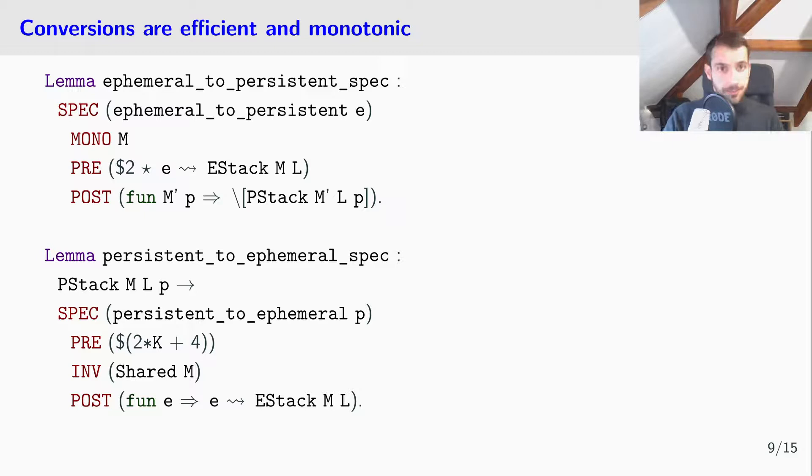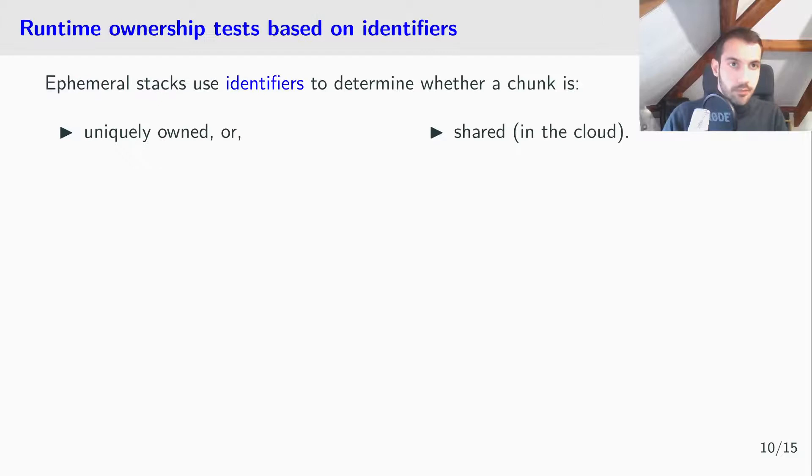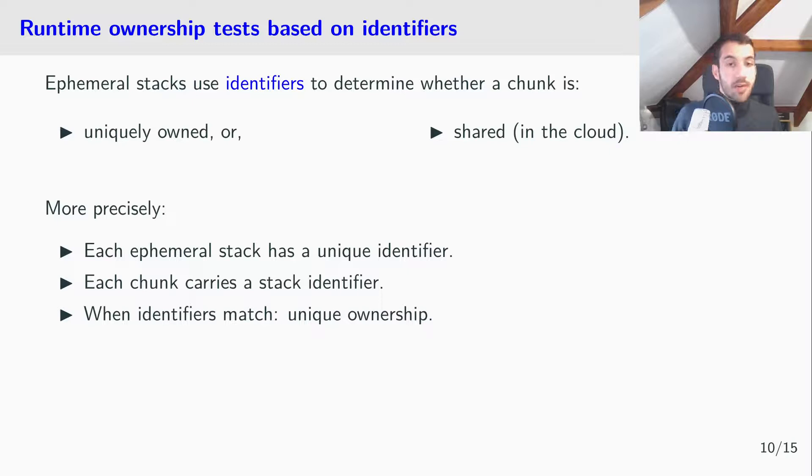Now, let's see some insight on the implementation. Indeed, ephemeral stacks use identifiers to determine whether a chunk is uniquely owned or shared, that is, in the cloud. More precisely, each ephemeral stack has a unique identifier, each chunk carries a stack identifier, and when the two match, there is unique ownership of the chunk by the ephemeral stack.